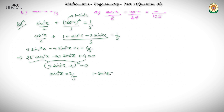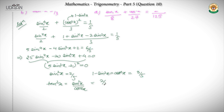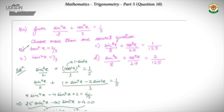From this, 1 minus sin²x equals cos²x. I will find the value of cos²x, which equals 3/5. So what do I get for tan²x? Tan²x is sin²x by cos²x, which is equal to (2/5) upon (3/5). So the value I get is 2/3.